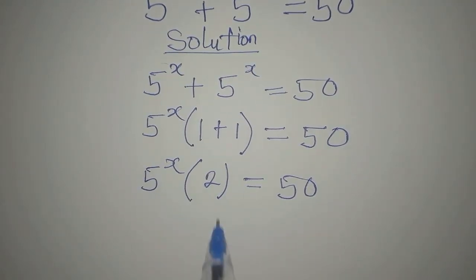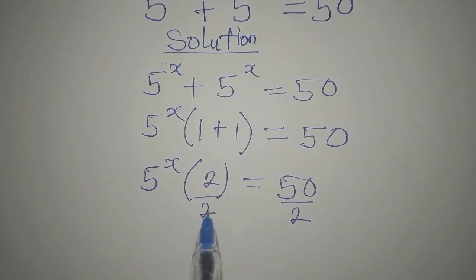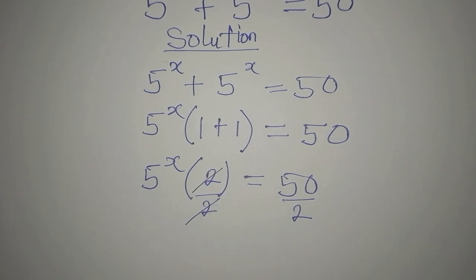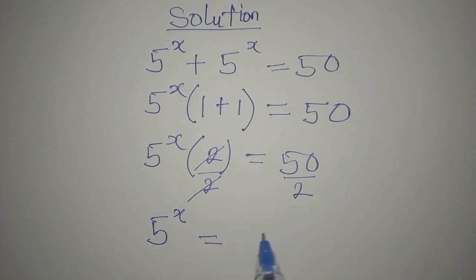The next step is to divide both sides by 2. This is to isolate the term, so 5 to the power of x will equal 25.